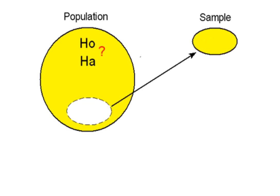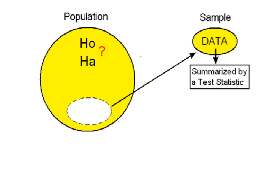In order to do that, we obtain a random sample, collect relevant data, and summarize it. We mentioned that the data is summarized by a test statistic, but we haven't gone into any details about it yet.